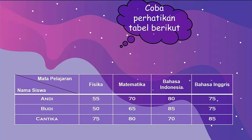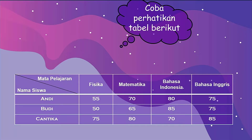Coba perhatikan tabel berikut. Tabelnya adalah untuk nilai ulangan dari 3 siswa untuk mata pelajaran fisika, matematika, bahasa Indonesia, dan bahasa Inggris. Andi memperoleh nilai fisika 55, bahasa Indonesia 80, bahasa Inggris 75. Sedangkan Budi untuk matematika memperoleh nilai 65, bahasa Indonesia 85, bahasa Inggris 75. Cantika nilai fisikanya 75, matematikanya 80, bahasa Indonesia 70, dan bahasa Inggris 85.